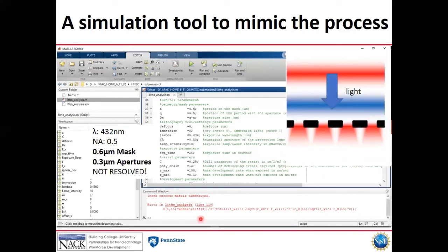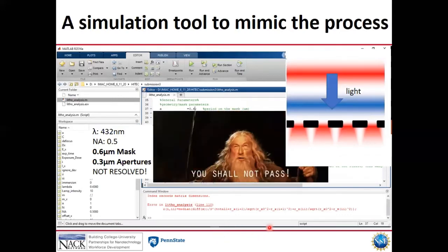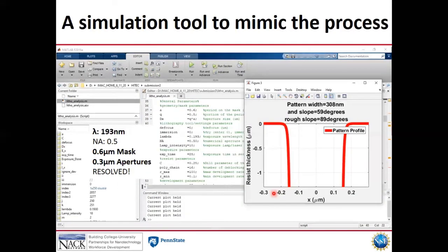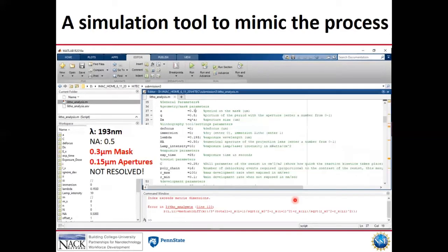Now, if we shrink down the period to 600 nanometers from one micrometer, we see an error message, you shall not resolve. As Gandalf points out, the light diffracts too rapidly and information is lost. As a remedy, let us shrink down the exposure wavelength to 193 nanometers instead of 432 nanometers and we're back in the game.